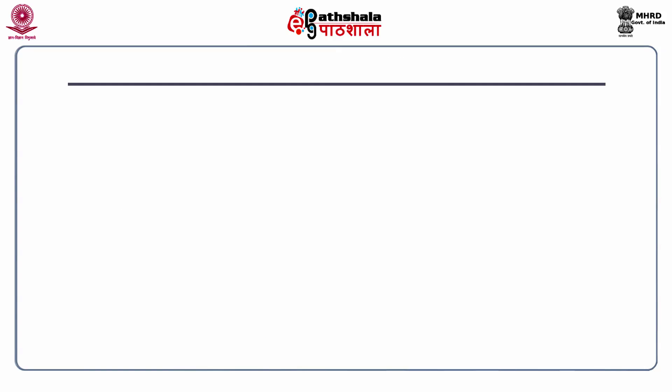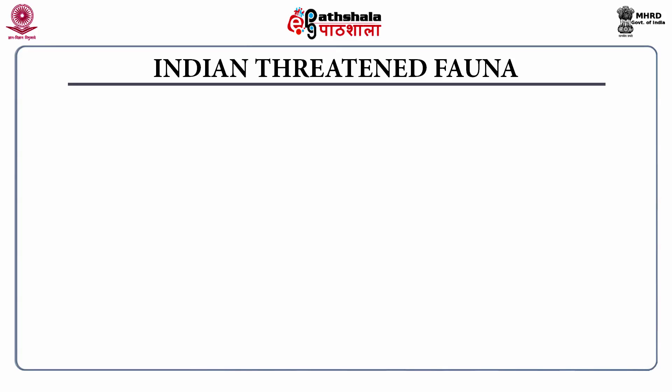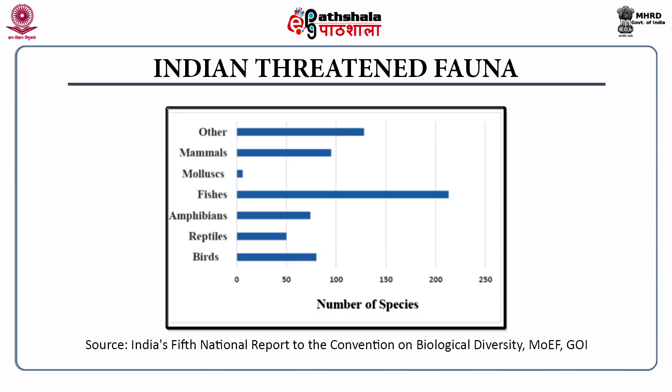Let us have a look at Indian threatened fauna. This figure, also from India's Fifth National Report on Biological Diversity, shows that about 70 species of birds are threatened, about 50 reptile species are threatened, about 70 amphibian species are threatened, more than 200 species of fish are threatened, and about 90 species of mammals are threatened in India. From this, we can infer that a significant number of species are threatened in India.